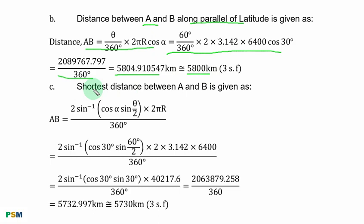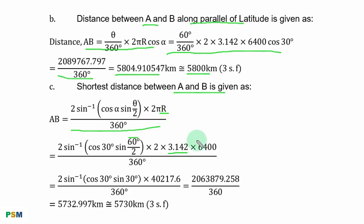Part C: the shortest distance between A and B is given by the great circle formula. Substituting alpha = 30 degrees, theta = 60 degrees divided by 2, pi = 3.142, and radius = 6,400 kilometres. Simplifying gives intermediate results, and after division, to 3 significant figures, the shortest distance between A and B is 5,730 kilometres.